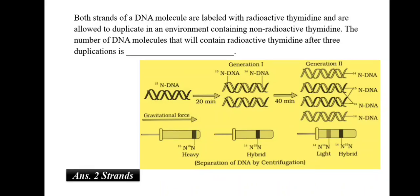Both strands of a DNA molecule are labeled with radioactive thymidine and are allowed to duplicate in an environment containing non-radioactive thymidine. The number of DNA molecules that will contain radioactive thymidine after 3 duplications is. So, we begin in this question only with 2 strands of DNA which have radioactive thymidine. No matter how many generation or duplication occurs, there will always be 2 molecules of radioactive thymidine. Thus, even after 3 generations, the number of DNA molecules which will have radioactive thymidine would be 2.